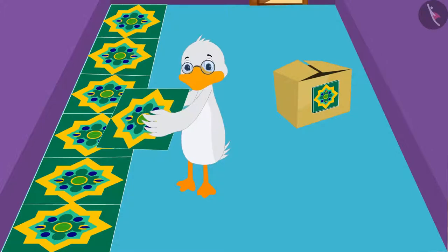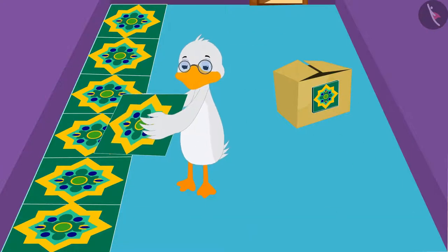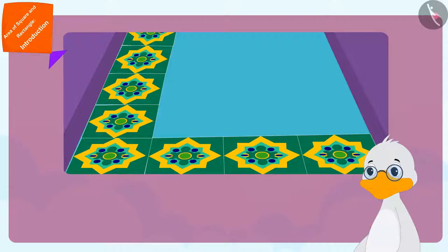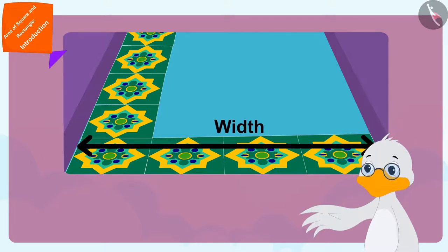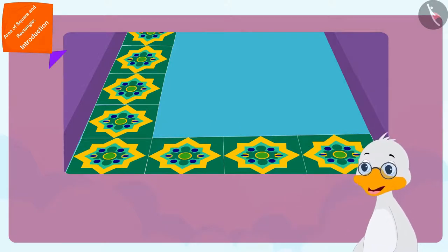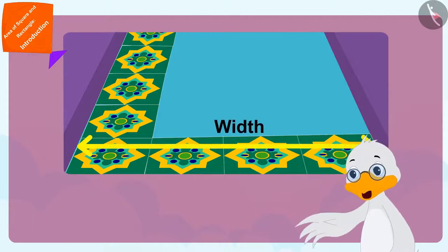Then, Uncle started laying the tiles along the width of his rectangle shaped floor. Uncle laid a total of four tiles along the width of his floor. There are a total of four one meter long tiles in the width of my floor.